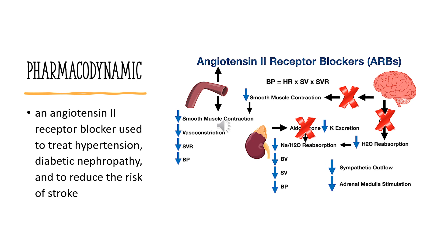As azulsartan blocks the angiotensin-2 receptor, the negative regulatory feedback of angiotensin-2 on renin secretion is inhibited. However, the resulting increased plasma renin activity and angiotensin-2 circulating levels do not overcome the blood pressure-lowering effect of azulsartan. Blood pressure-lowering effects of antihypertensive agents can be reduced in patients of African descent. However, there are no recommended dosage adjustments of azulsartan on the basis of a patient's sex, race, or degree of renal or hepatic impairment.